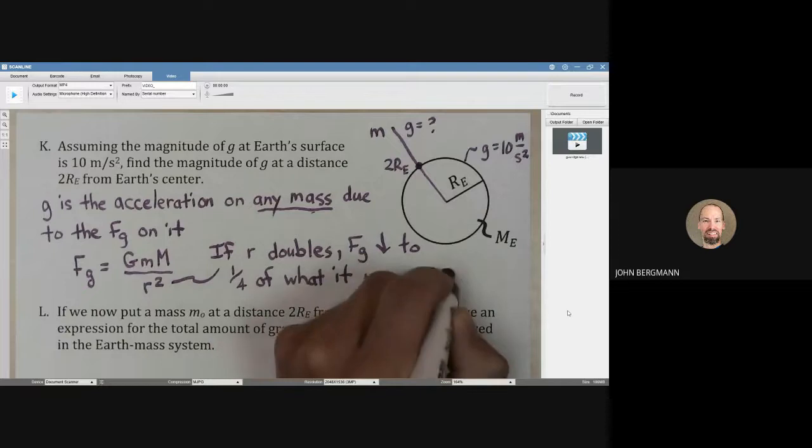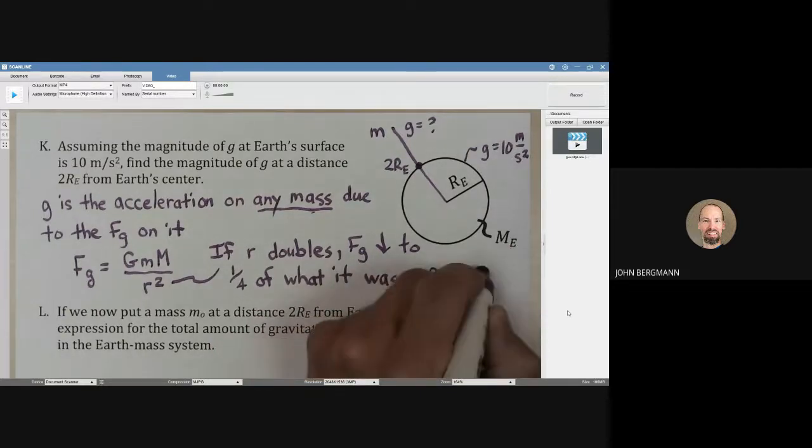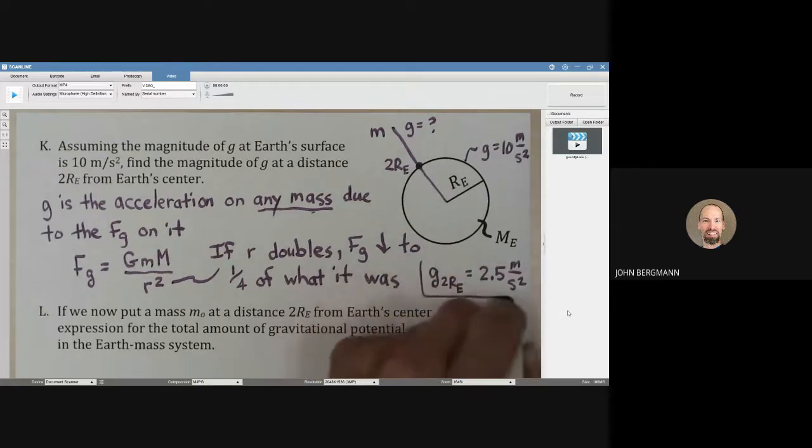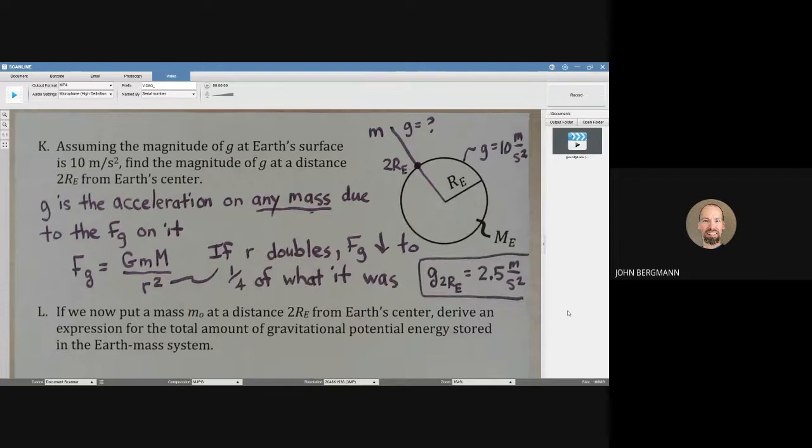Long story short, g at a distance of 2RE away is going to be one-fourth of 10, which is 2.5 meters per second squared. The distance doubles, so the force goes down by a factor of four, and therefore the acceleration goes down by a factor of four.